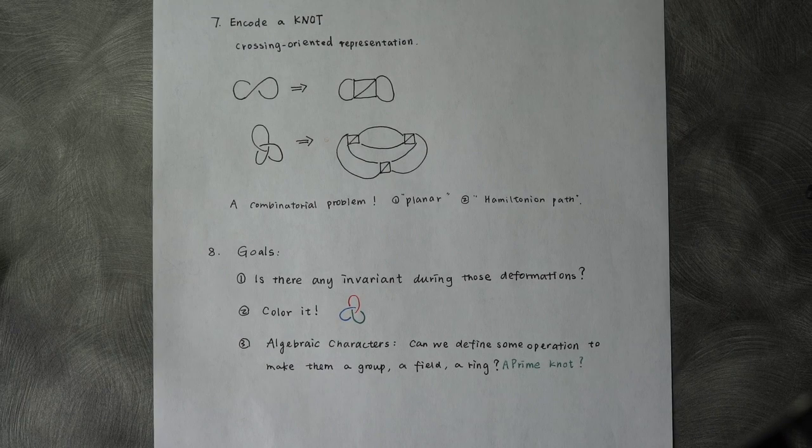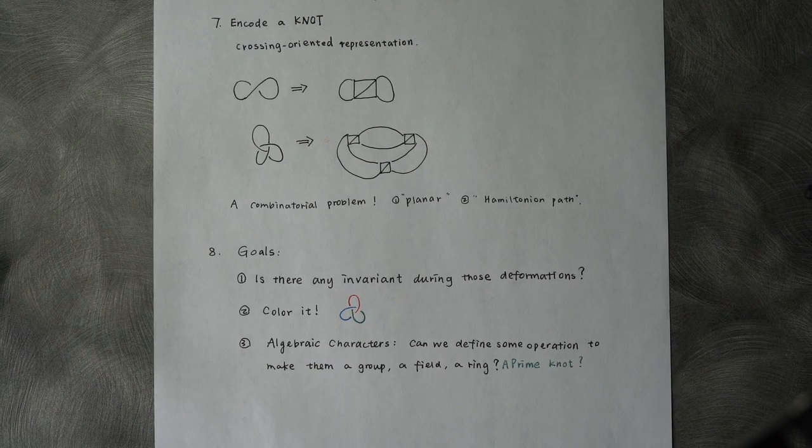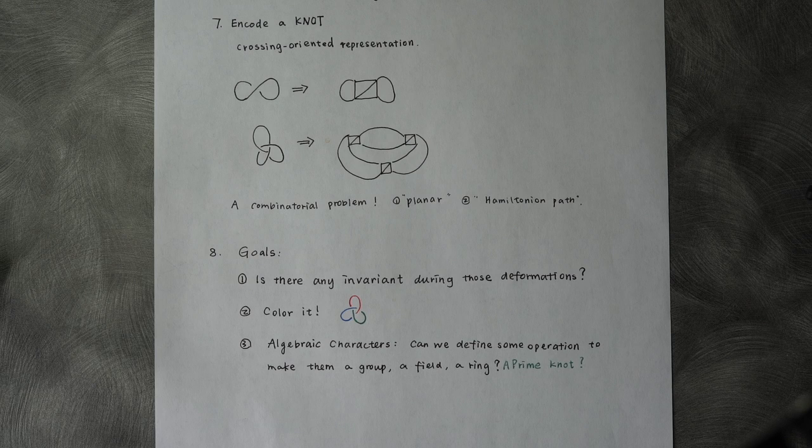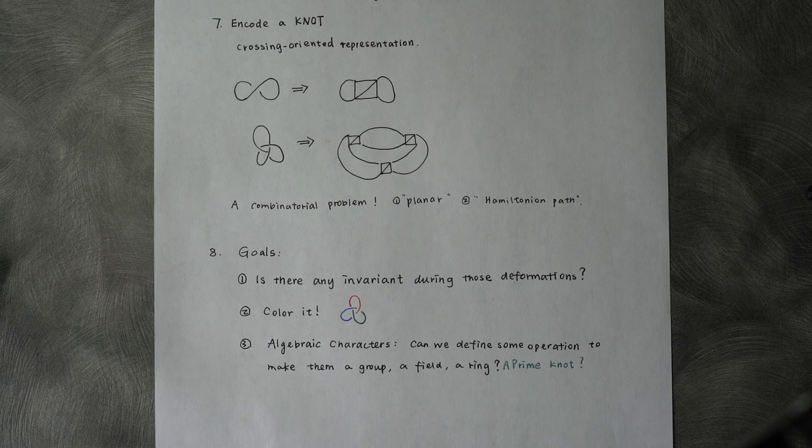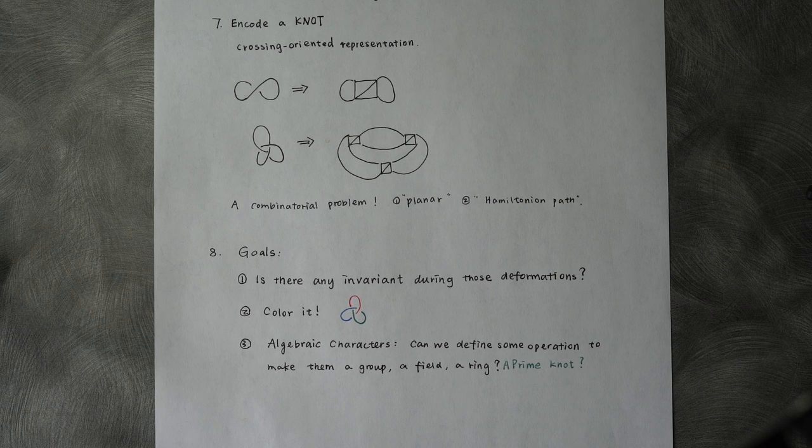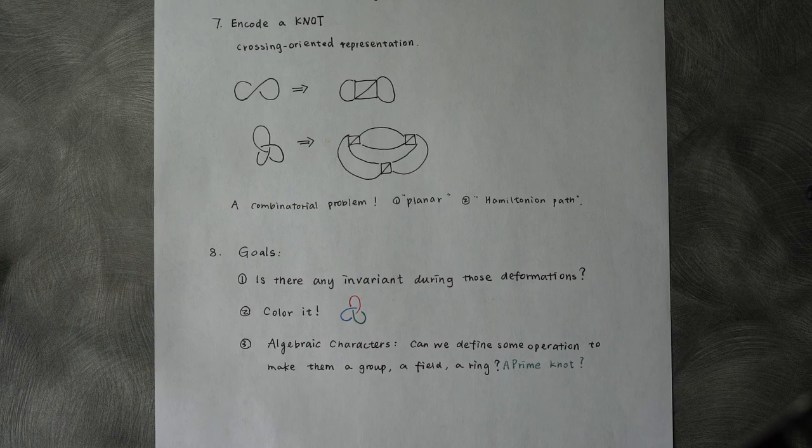This cross-oriented representation just changed this topological problem into a combinatorial one. A valid knot projection under this representation should be a planar graph with a Hamiltonian cycle without smaller other cycles.